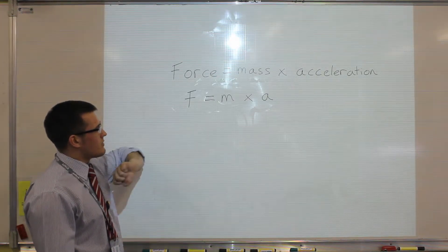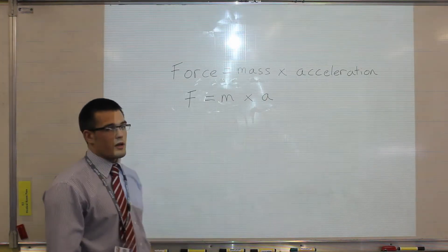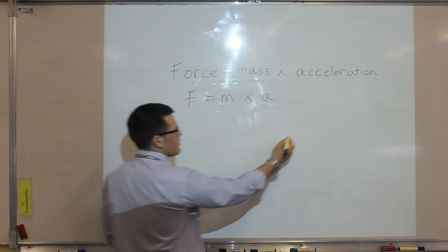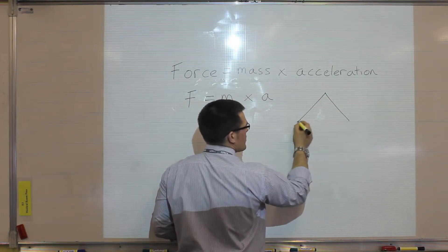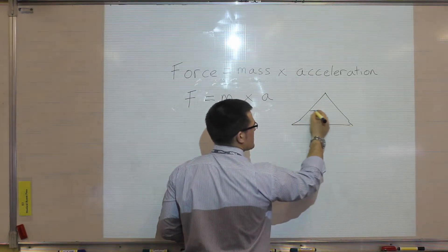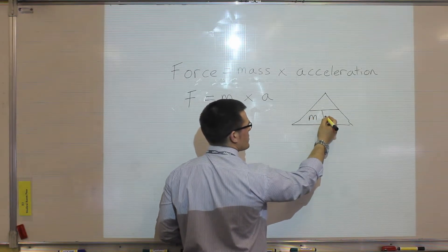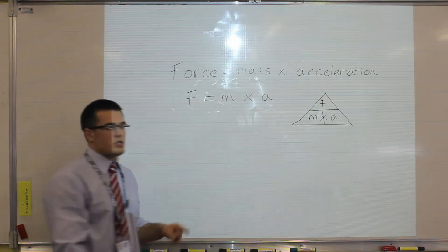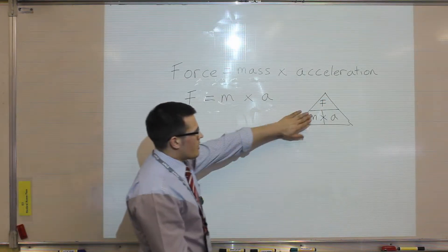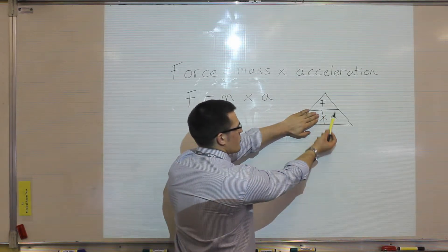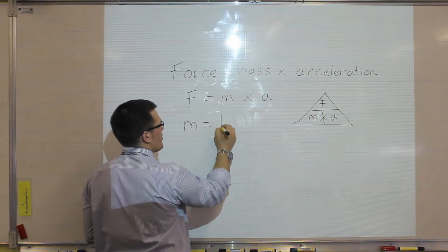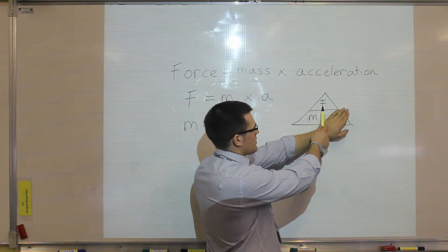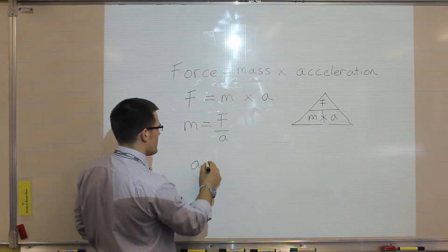If you get an equation where two quantities are multiplied, the multiplied quantities go on the bottom of the triangle. Drawing the triangle: multiplied always goes along the bottom, so mass multiplied by acceleration goes at the bottom, and force goes at the top. To calculate mass, cover mass and you get force divided by acceleration. To work out acceleration, cover acceleration and you get force divided by mass.